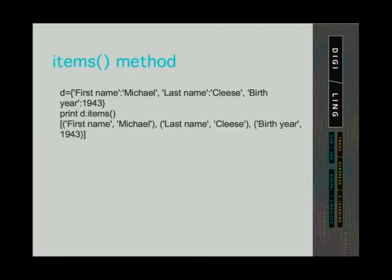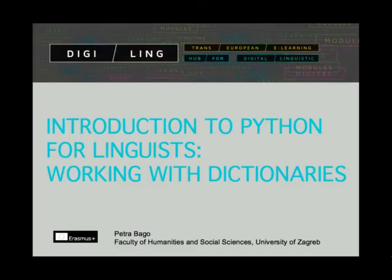Finally, the last method called items returns a list of tuples containing key-value pairs. Let's look at the code.